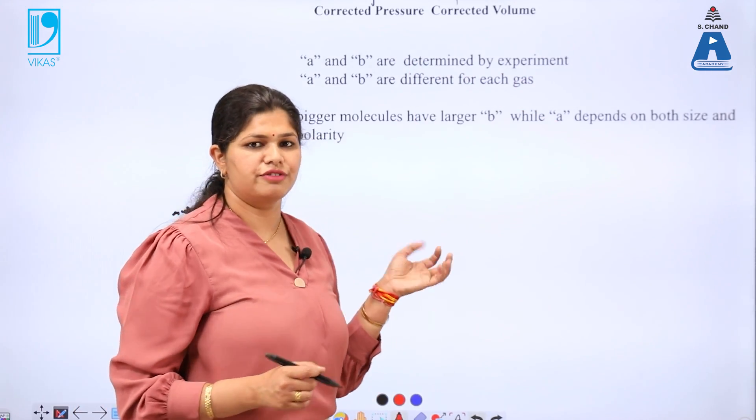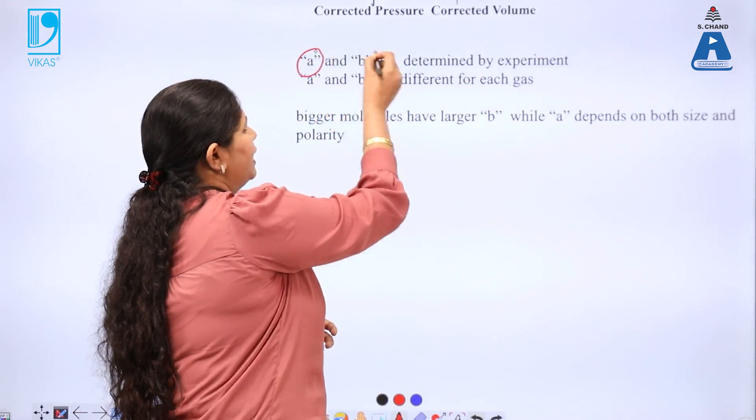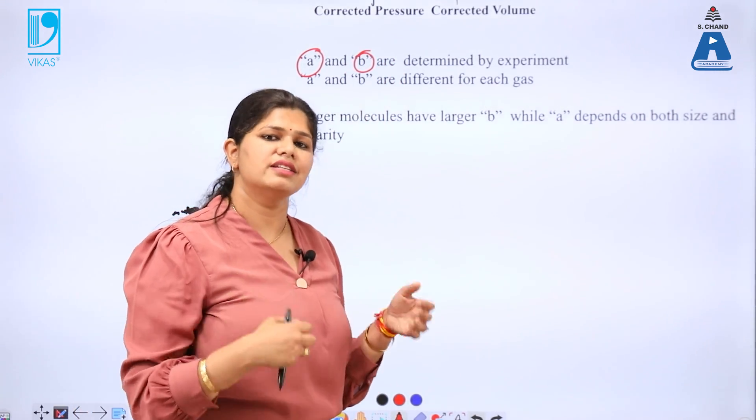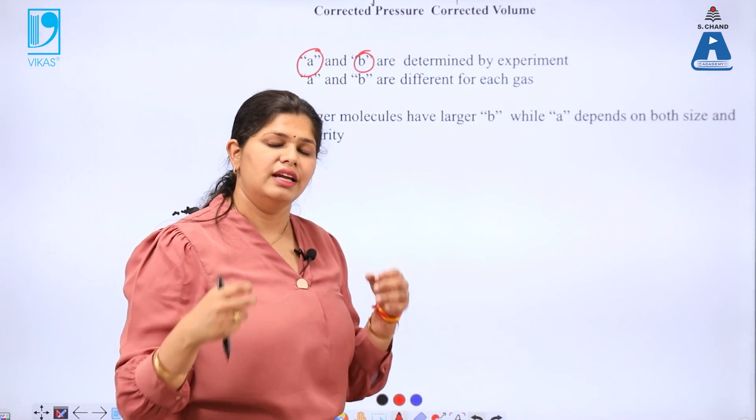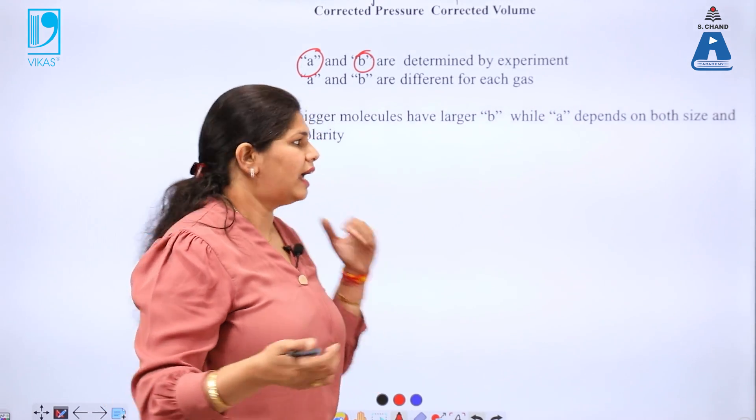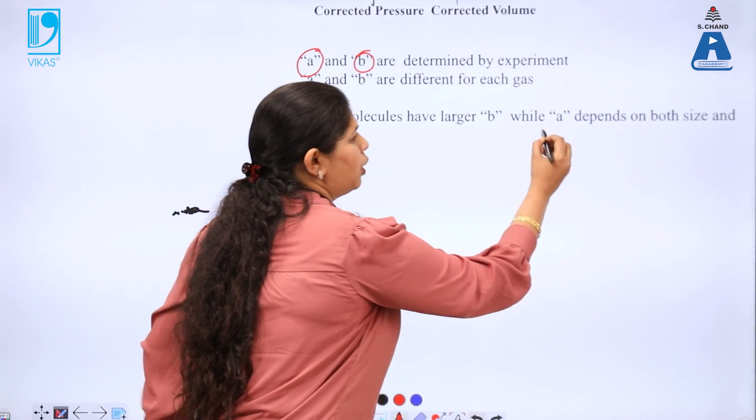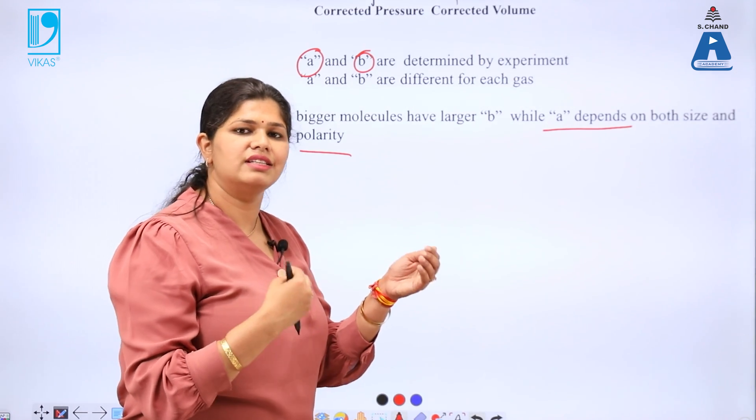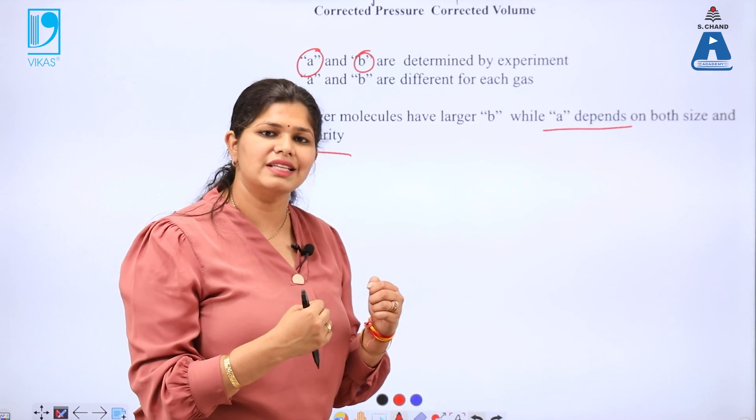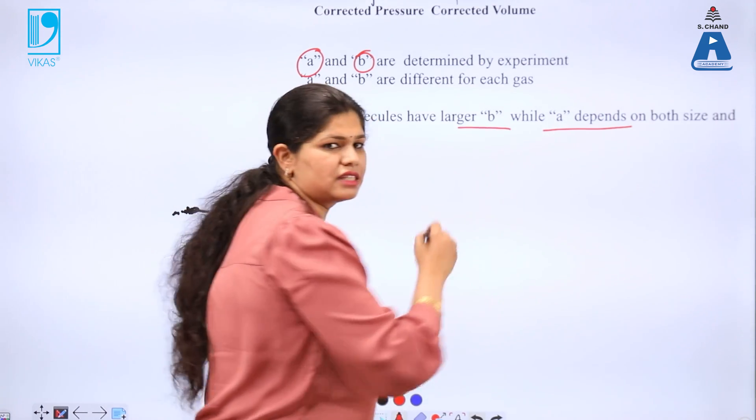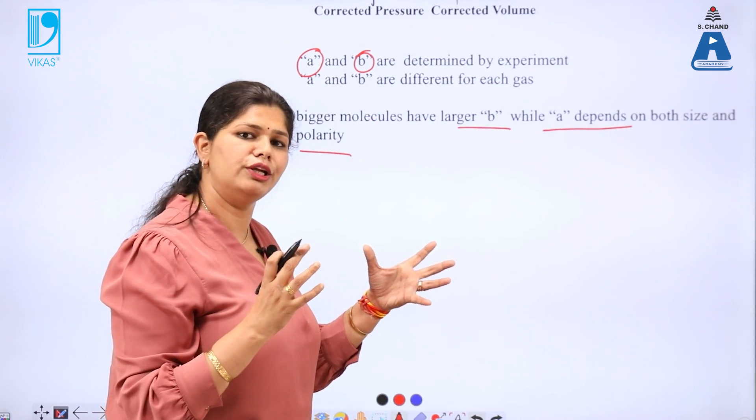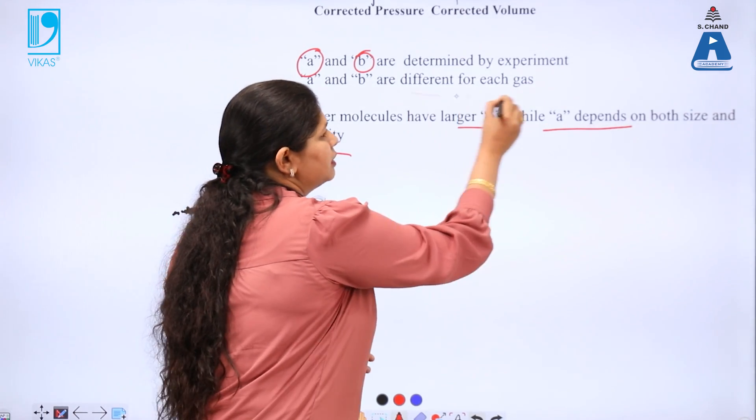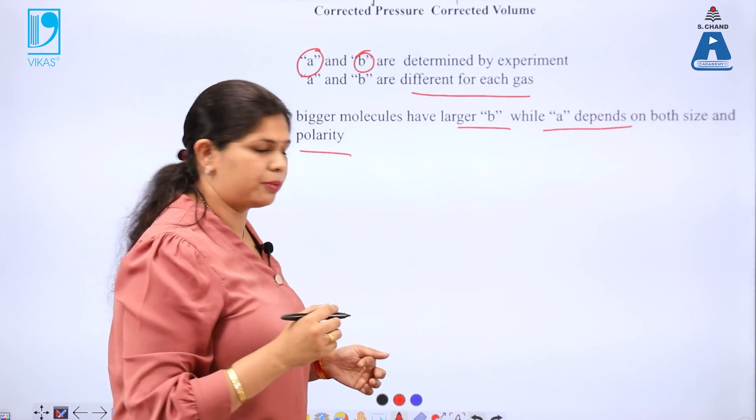In the Van der Waals equation of state, we get A and B. A and B are the Van der Waals constants which are characteristic property of a gas. It is dependent on the nature of the gas and A depends on size as well as on the polarity because it reflects the forces of attractions that play in a system and B represents size. The larger the size of the molecule, larger will be the value of B and these are characteristic property of a gas.